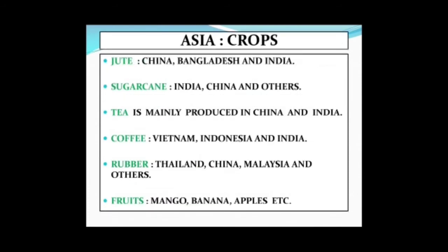Other cash crops that also grow across Asia include jute, sugarcane, tea, coffee, rubber and fruits. Tea is mainly produced in China and India, coffee mainly in Vietnam, Indonesia and India. Different crops grow in different parts and countries of Asia, serving as important profit-making commodities.